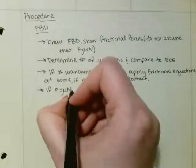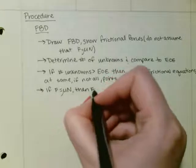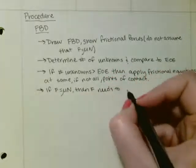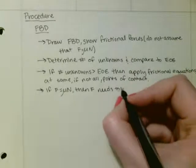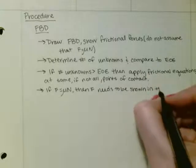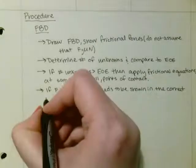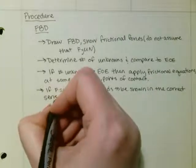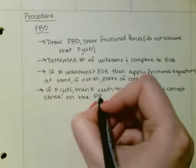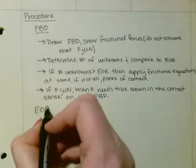Like I said earlier, if you're using F equals mu n, then F needs to be shown in the correct sense on the free body diagram.